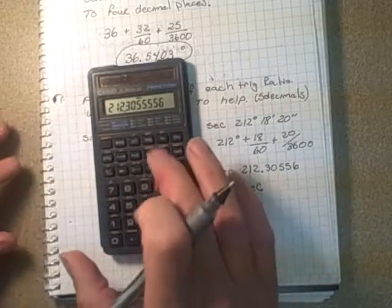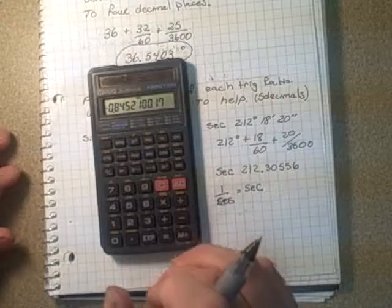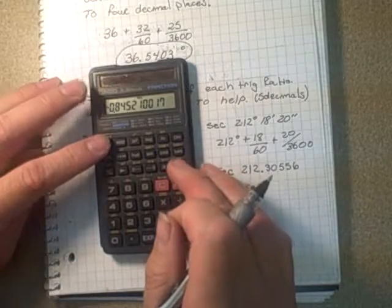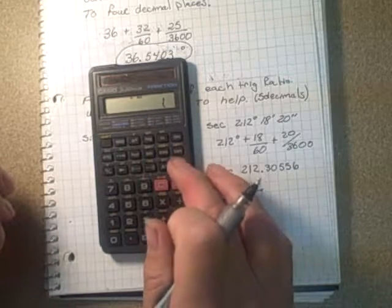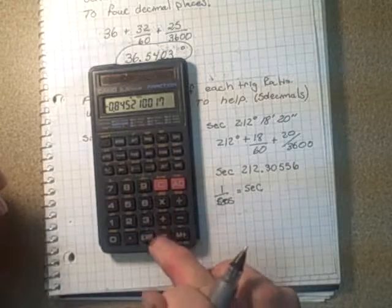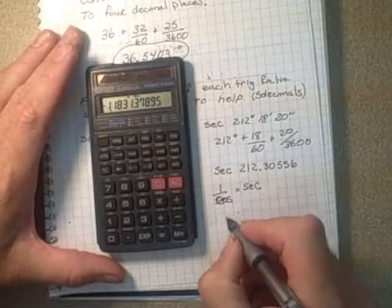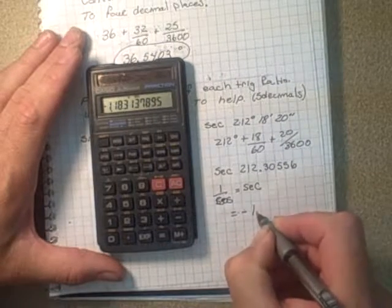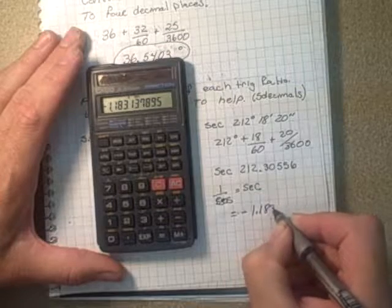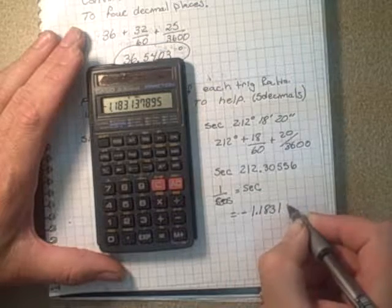So I've got it in degrees still. I take the cosine, put that in my memory, and go 1 divided by that number. So I get secant is equal to negative 1.18314.